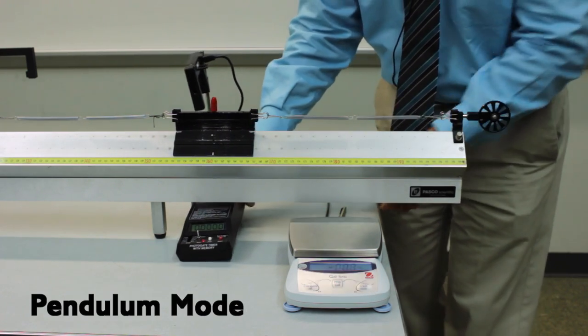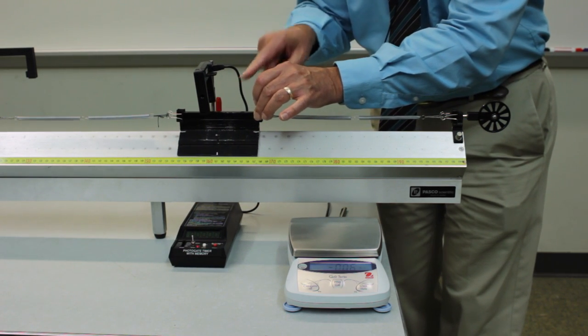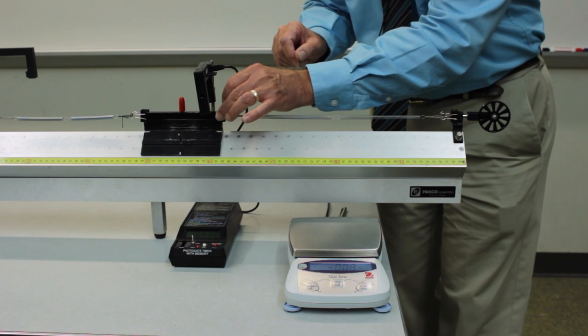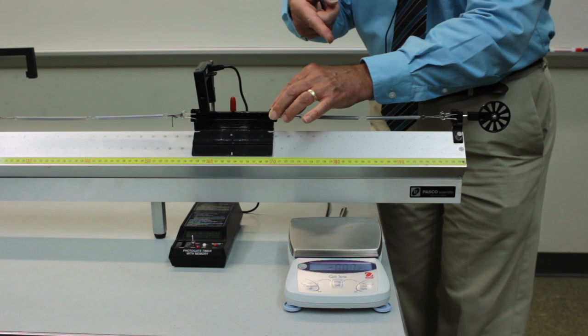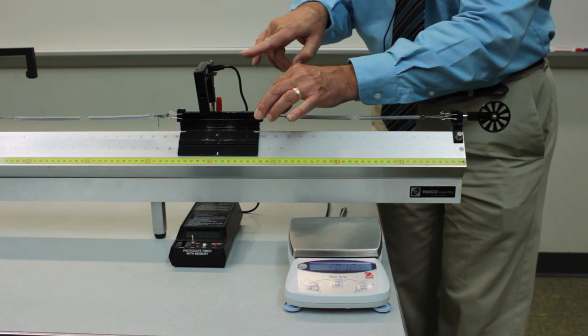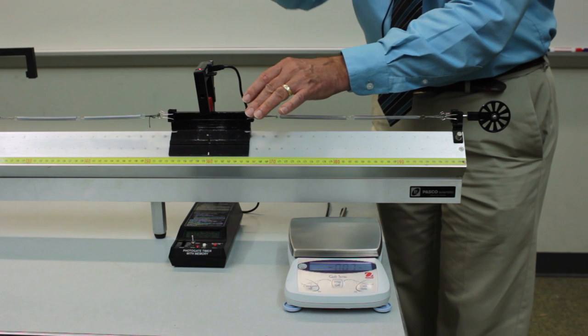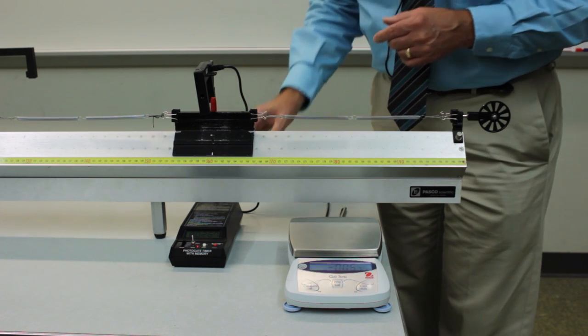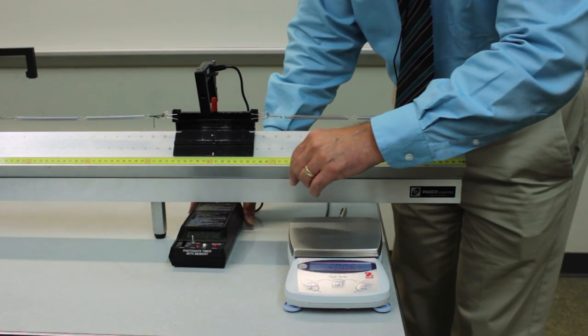What this does is to trigger the photogate when the little peg passes through it the first time. It ignores the second interruption on the way back and it stops timing on the third interruption. That gives you the time for one complete cycle of oscillation, which is the period of the motion. So set it to the pendulum mode.